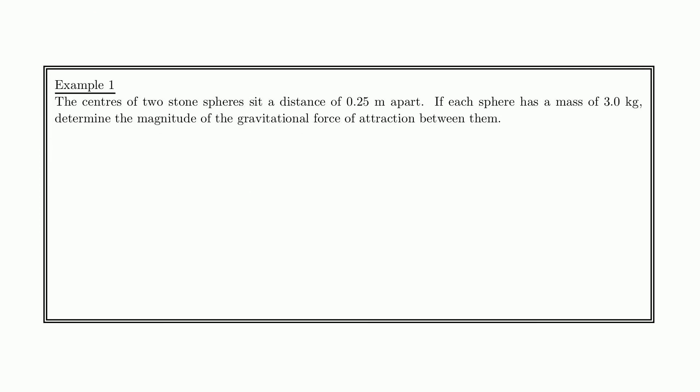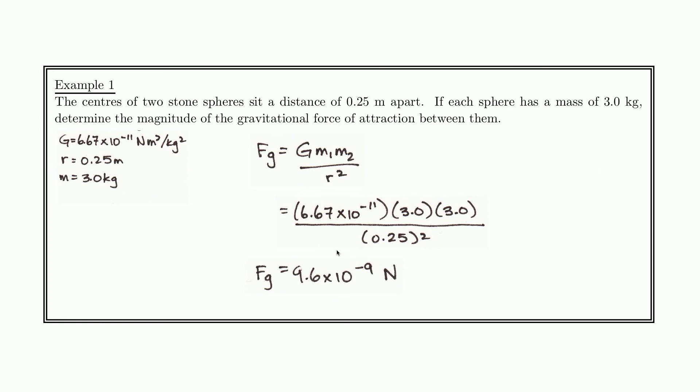So let's take a look at a little example. This will be complete review for most of you if you've taken grade 11 physics. The centers of two stone spheres sit a distance of 0.25 meters apart. Each sphere has a mass of 3 kilograms. Determine the magnitude of the gravitational force of attraction between them. So here's what we have. We know that g is equal to 6.67 times 10 to the negative 11. We know that r is equal to 0.25 meters. We know that m is equal to 3 kilograms. If we are to calculate using the universal law of gravity, we simply substitute in our values, 6.67 times 10 to the negative 11 times 3 times 3, because the masses are the same, divided by 0.25 squared. I will remind you, do not forget to square. And you come up with 9.6 times 10 to the minus 9 newtons.